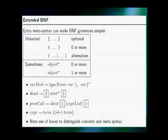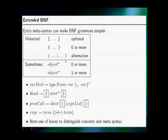Optional terms can be represented by square brackets. Zero or more occurrences are represented by curly brackets. Alternation of expressions can be represented by the pipe operator. Zero or more expressions are represented by an asterisk mark. One or more expressions are represented by a plus sign.